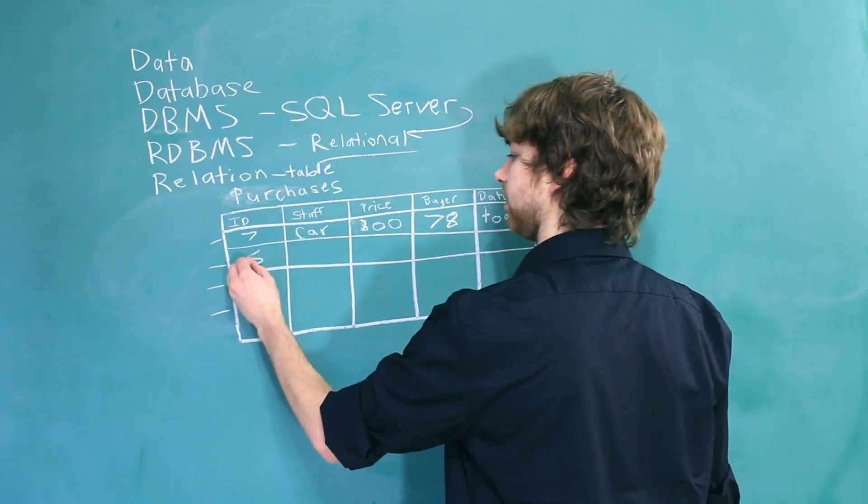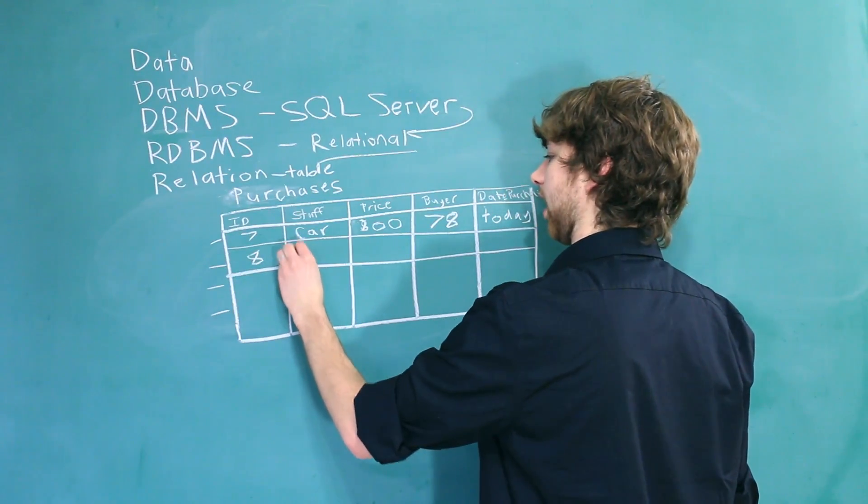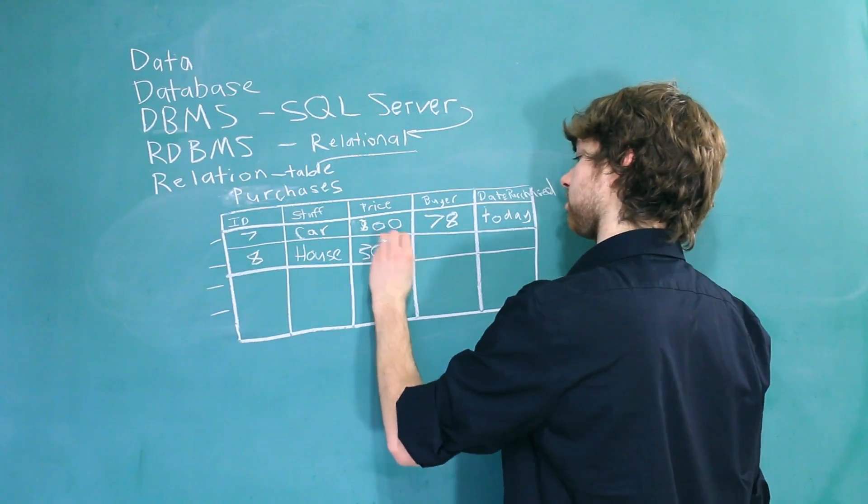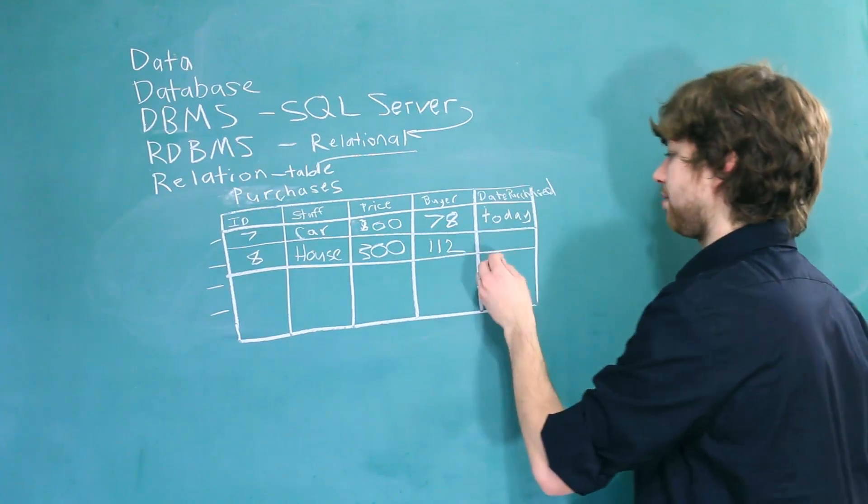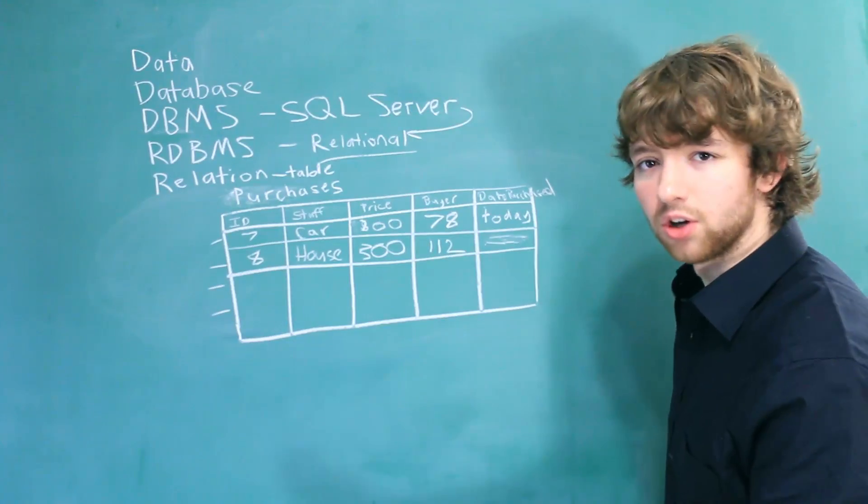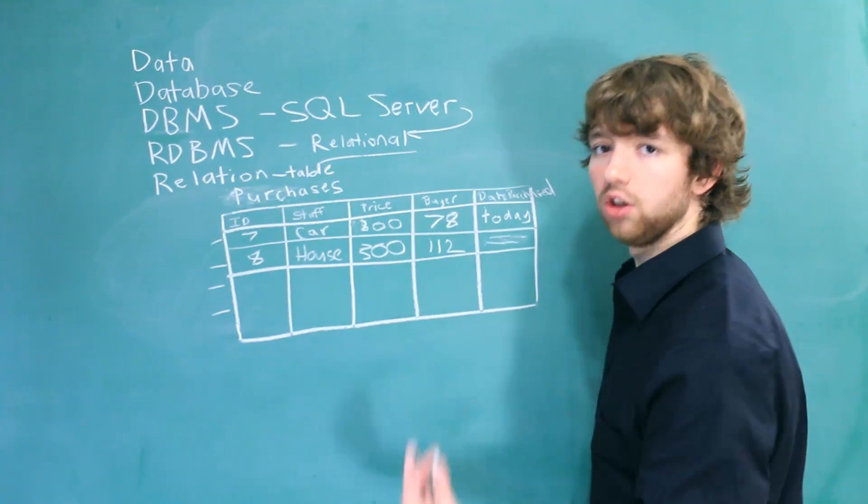So we could have another one in here with the ID of 8. This guy bought a house. $300. Cheap house. Who bought it? The guy with the ID of 112. Date purchased. So the two key words here you really need to know are column and row.